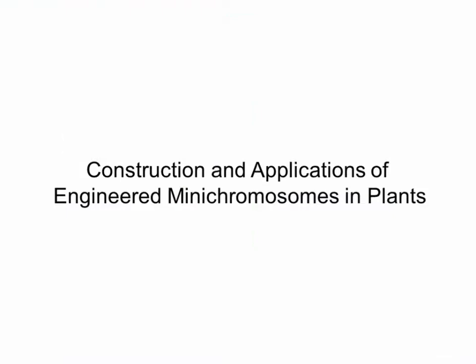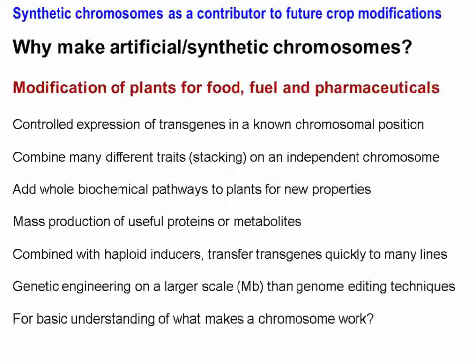Thank you very much. It's a pleasure to be here and to welcome all of the participants. In this section, we will talk about the construction and application of engineered mini-chromosomes in plants. The idea of artificial chromosomes has potential for modifying plants for a variety of purposes—for food, fuel, and pharmaceuticals. The advantages include allowing controlled expression of transgenes in a known chromosomal position and allowing those to be stacked on an independent chromosome not associated with the other chromosomes in a particular species.